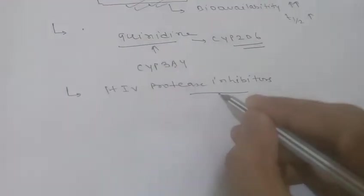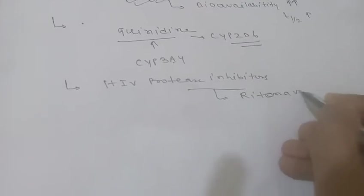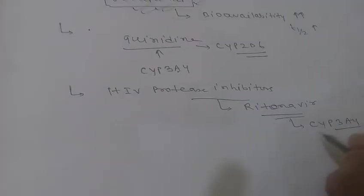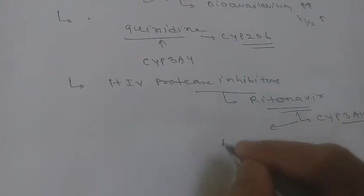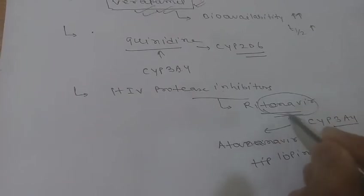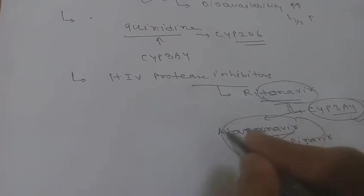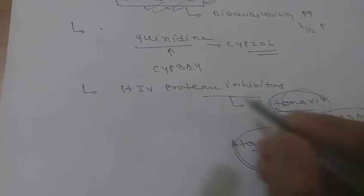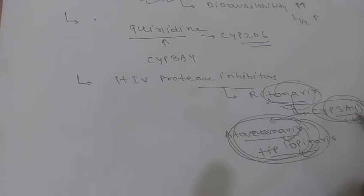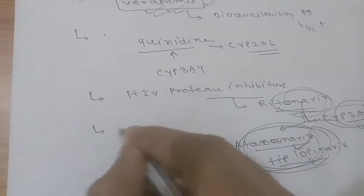An important clinical point about HIV protease inhibitors: low-dose ritonavir inhibits CYP3A4 isoenzymes. This inhibition decreases the metabolism of other HIV protease inhibitors like lopinavir, allowing them to escape metabolism and exert greater effects. This is called the 'boosted HIV protease inhibitor' strategy — boosting the effect of these drugs by giving low doses of ritonavir to inhibit CYP3A4.